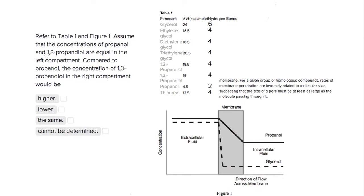...and the concentrations of 1,3-propandyl, a different substance, are equal in this left compartment. So here's the left compartment before it flows across this membrane, trying to get from left to right.